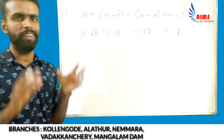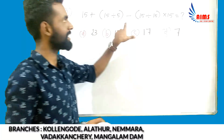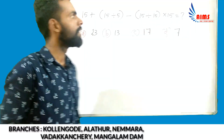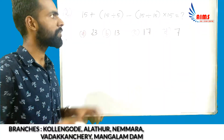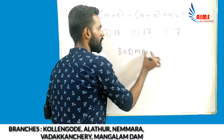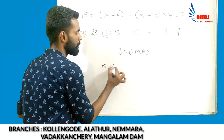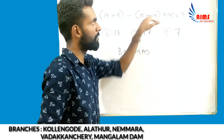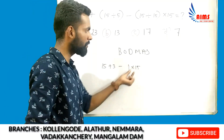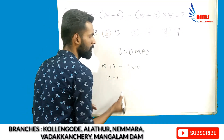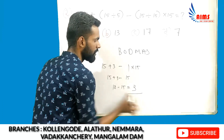The next question is a BODMAS simplification. The question is: 15 plus bracket of (15 divided by 5) minus 15 divided by 5 into 15. We simplify the bracket first — 15 divided by 5 is 3. Then 15 plus 3 minus 15 divided by 15 gives 1, so 15 plus 3 minus 15 equals 3. The answer is 3.